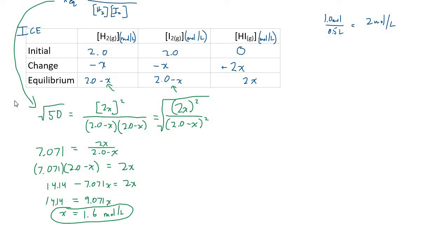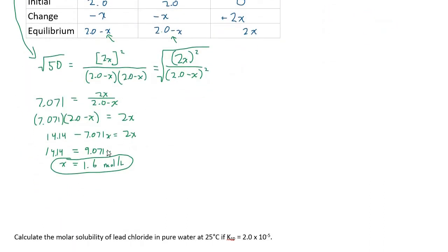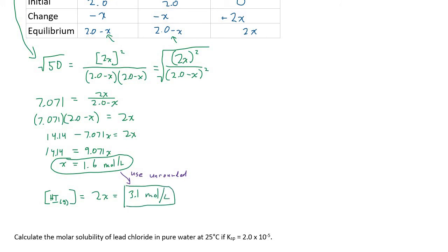The question asks for the equilibrium concentration of hydrogen iodide, not hydrogen or iodine gas. The concentration of HI is 2x. Using the unrounded value (1.55-something from the calculator), 2x gives 3.1 mol/L. Note: 1.6 × 2 = 3.2 would introduce rounding error — always use the unrounded number and only round at the very end. So the equilibrium concentration of HI is 3.1 moles per liter.